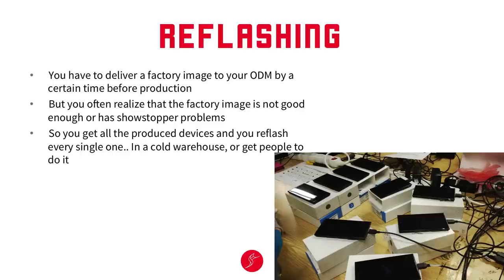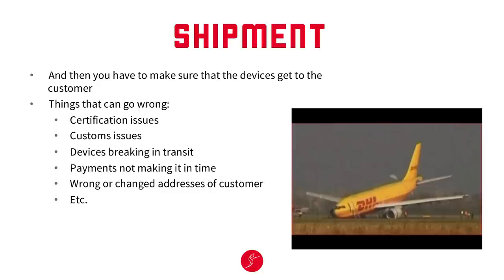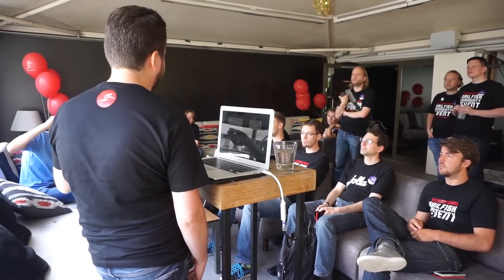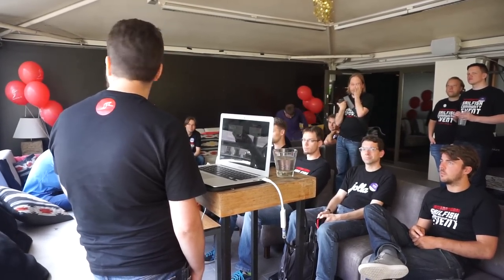Eventually you get a product, you pack the gift box back up again, hope nothing was missing. You try to get it shipped, but sometimes things go wrong. There can be certification issues, customs issues — they don't believe the declared value of the device or that VAT has been paid. Devices breaking in transit, payments not coming in time, wrong or changed customer addresses, and page crashing — it hasn't happened to us yet, but I'm sure it will.